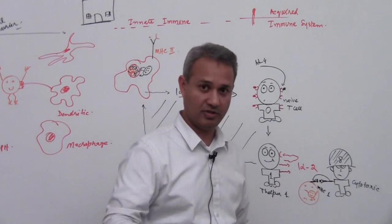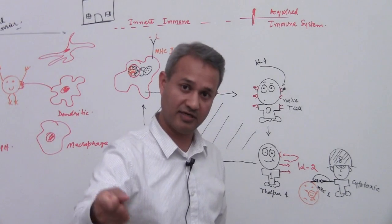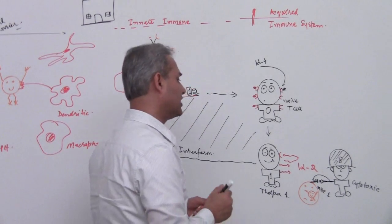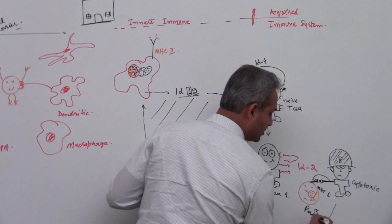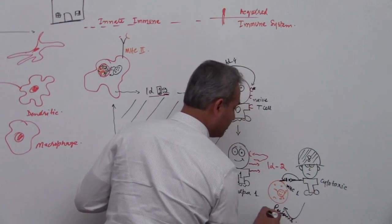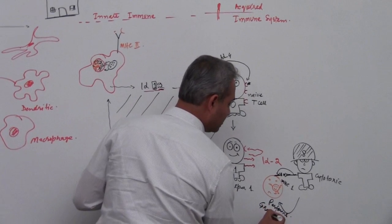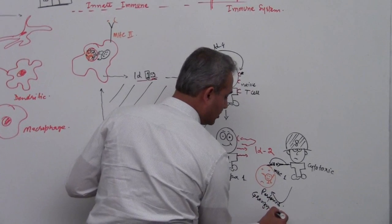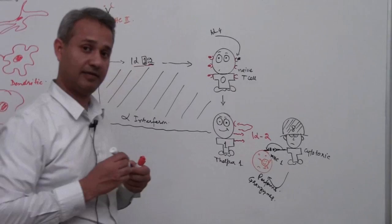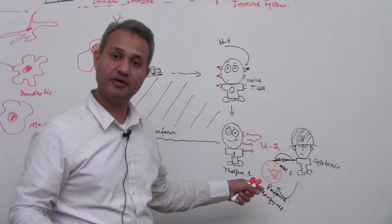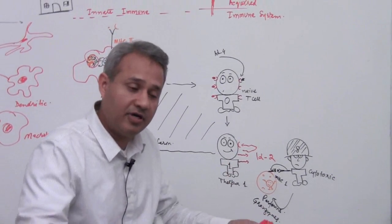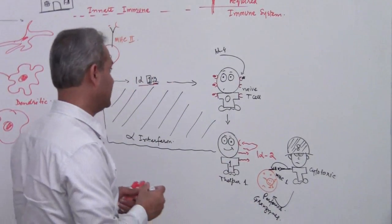How do they kill them? See this soldier, he has gotten his own pistol and his own bullets. How do they kill them is they send perforins - we'll talk more about them - and granzymes. We'll talk more about these two. But they send perforins and granzymes which then go and break the cell apart and kill it. It's like a criminal is hiding somewhere and we just whack that place.